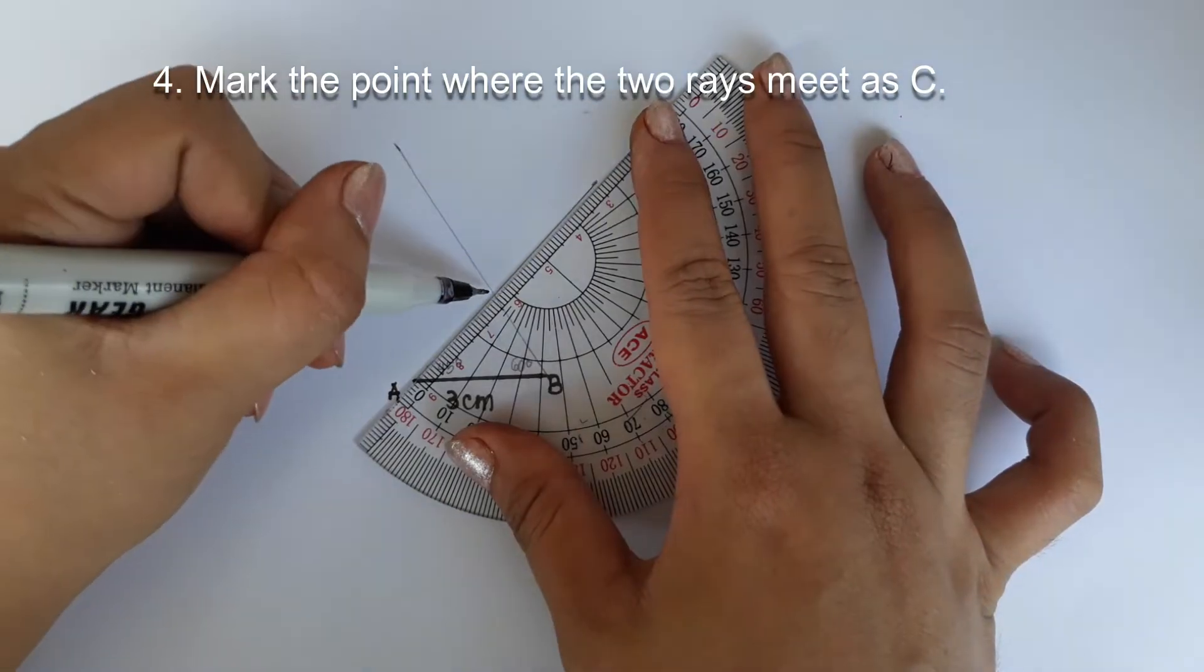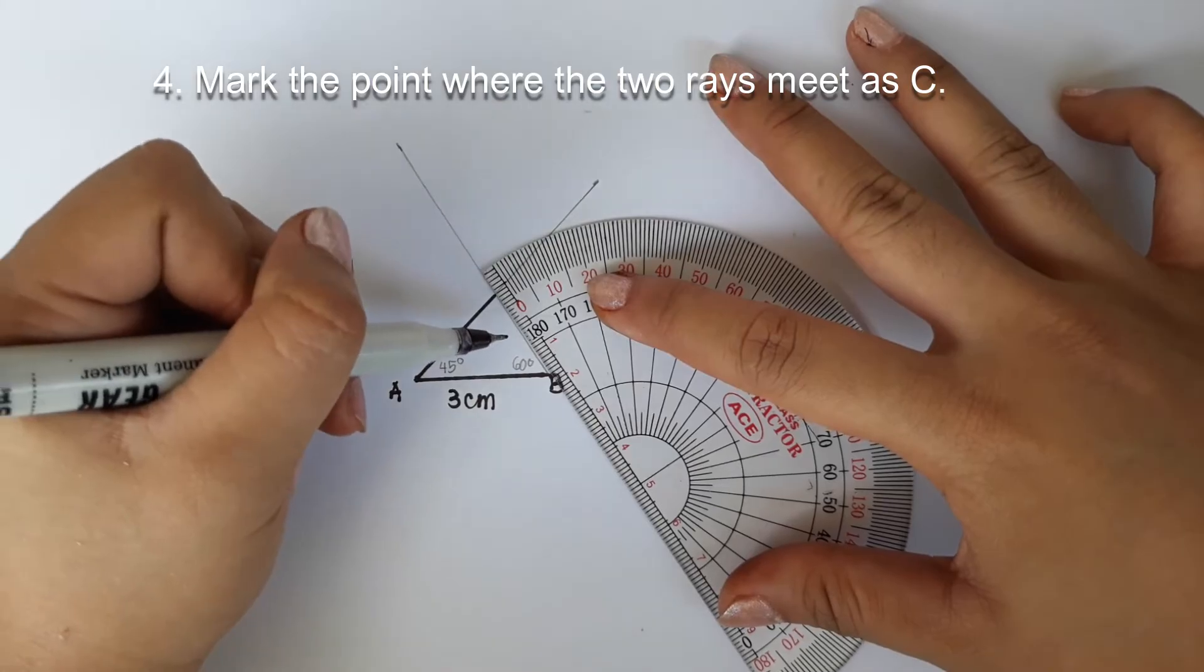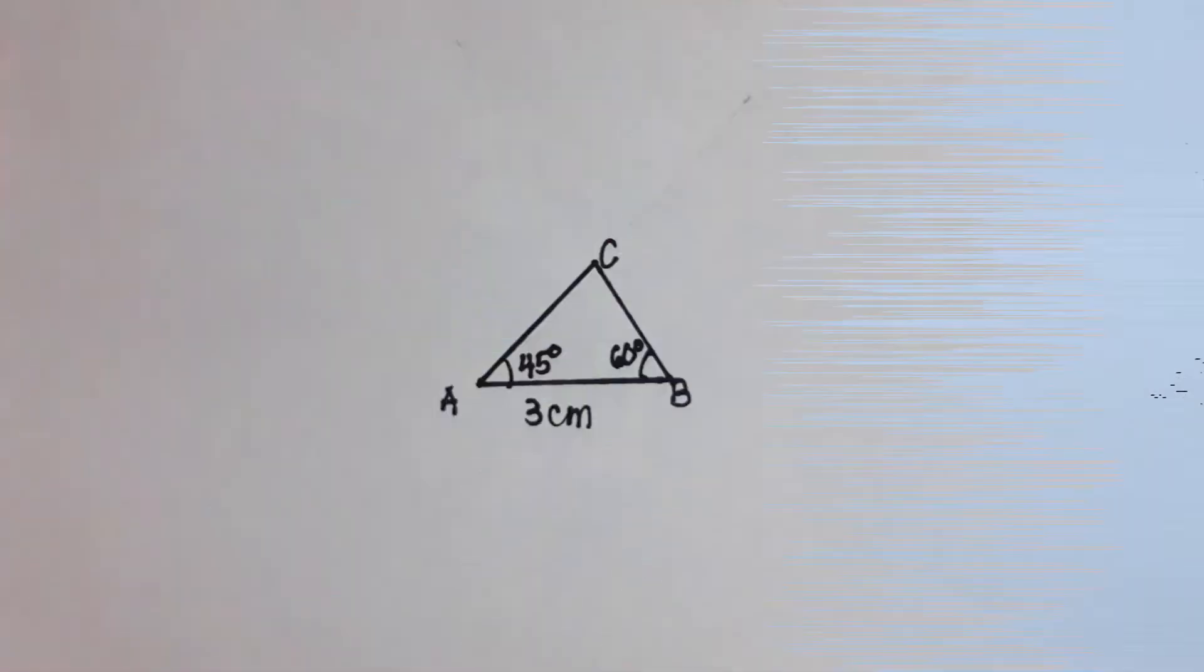And number 4. Mark the point where the two rays meet as C. Thus, you obtain a triangle ABC of the required measurements.